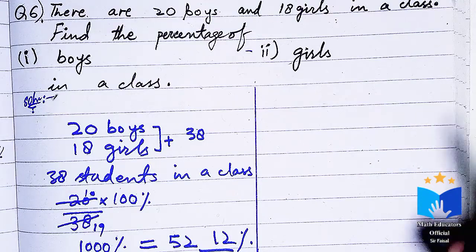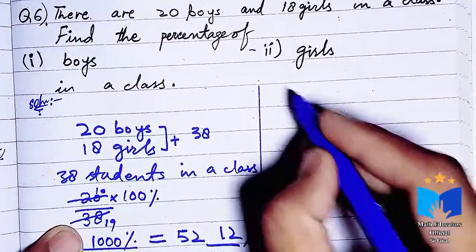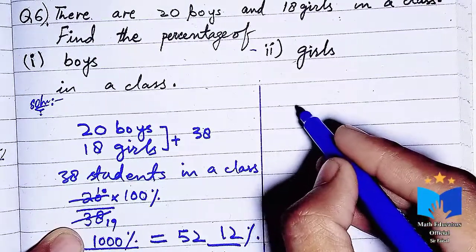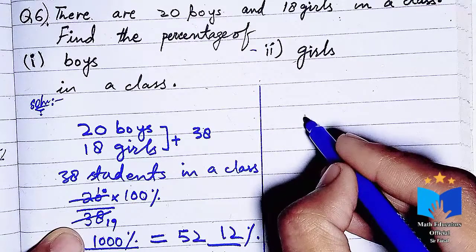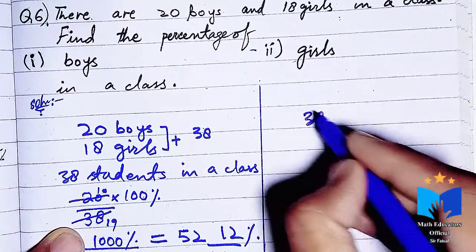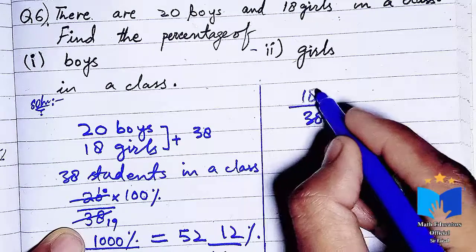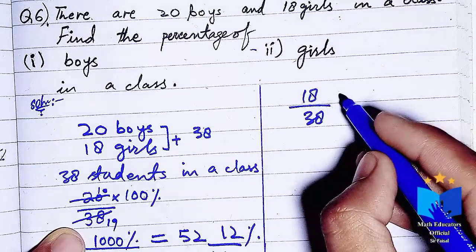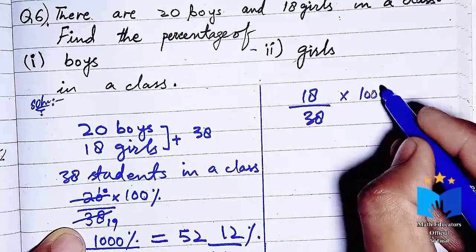Now we will find the percentage of girls. We have the total students which is 38. The percentage of girls is 18 over 38 multiplied by 100.